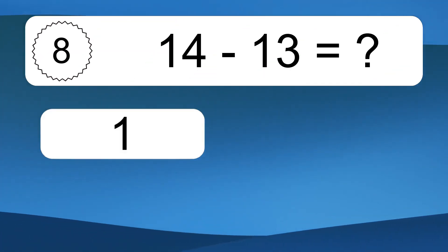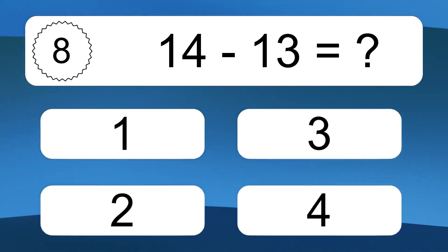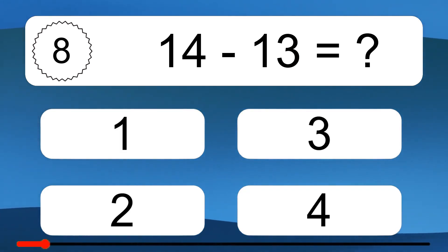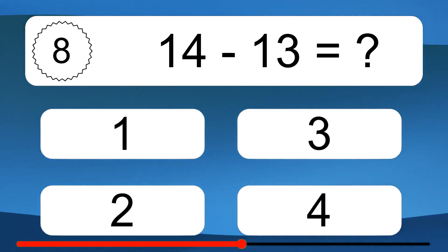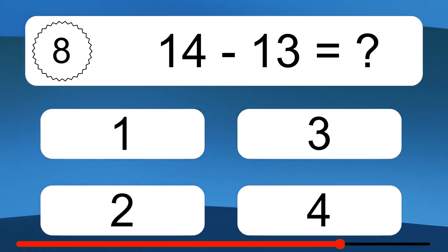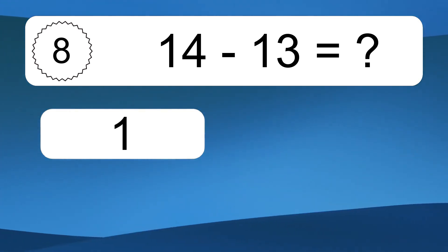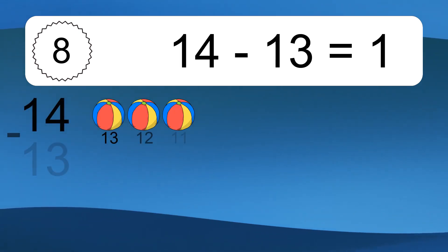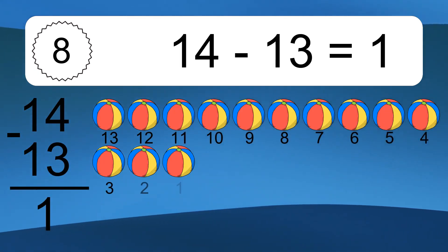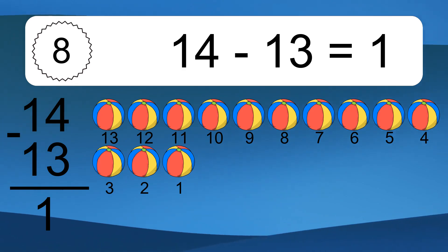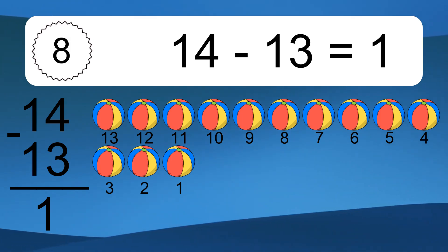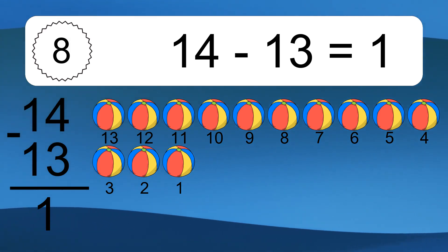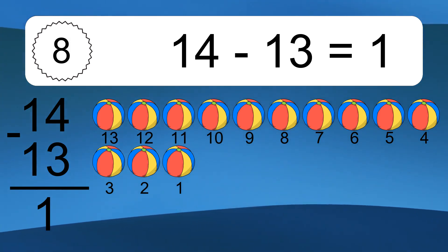14 minus 13 equals what? 14 minus 13 equals 1. Let's count it: 13, 12, 11, 10, 9, 8, 7, 6, 5, 4, 3, 2, 1.